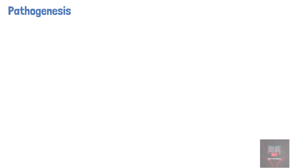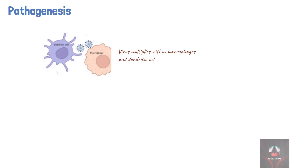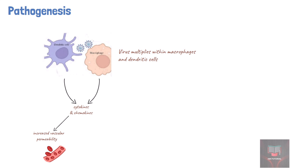Pathogens implicated in viral hemorrhagic fevers are able to multiply within macrophages and dendritic cells of the immune system. The infected cells are then triggered to release cytokines and chemokines, which cause increased vascular permeability and a pro-coagulant state, leading to increased risk of hemorrhage. These viruses can also trigger mechanisms resulting in disseminated intravascular coagulation.